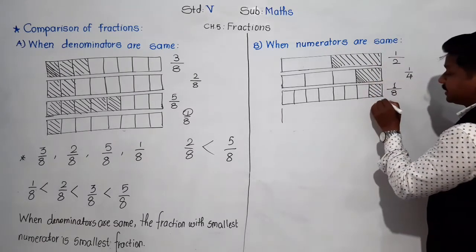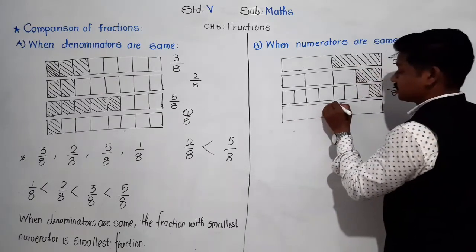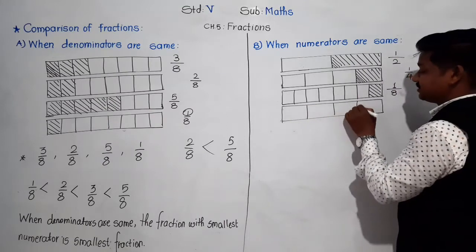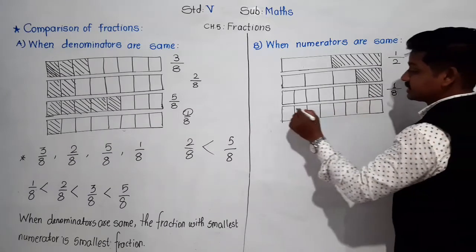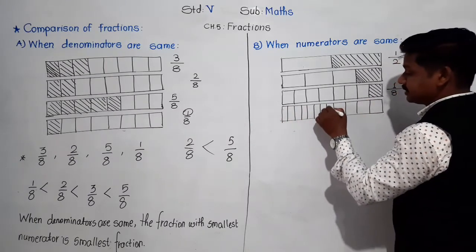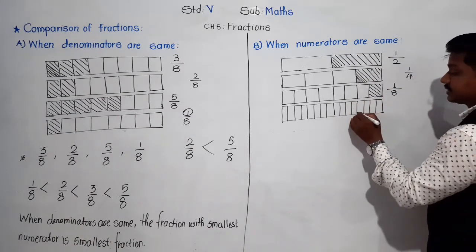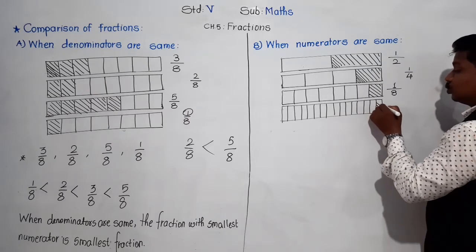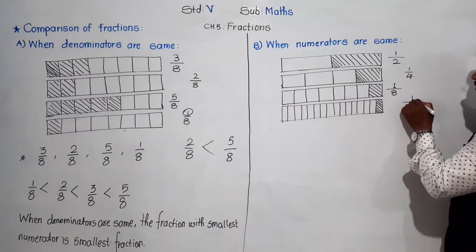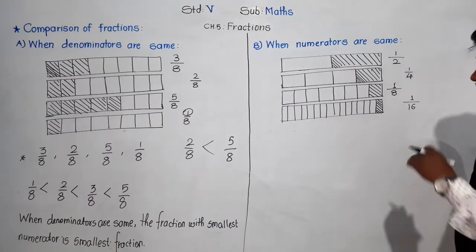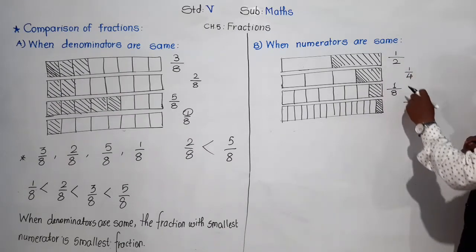One more chocolate — this time the chocolate is divided into 16 equal parts, and out of 16 equal parts, one part is shaded. So the fraction for the shaded part is 1/16. Now we have four fractions: 1/2, 1/4, 1/8, and 1/16.